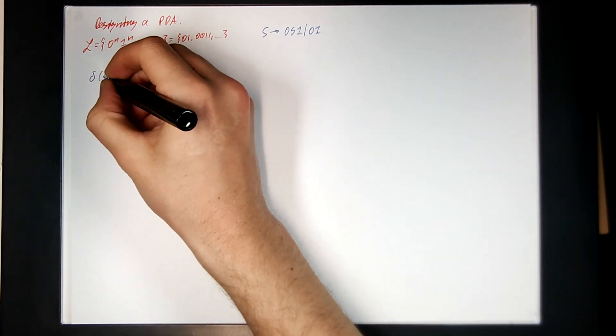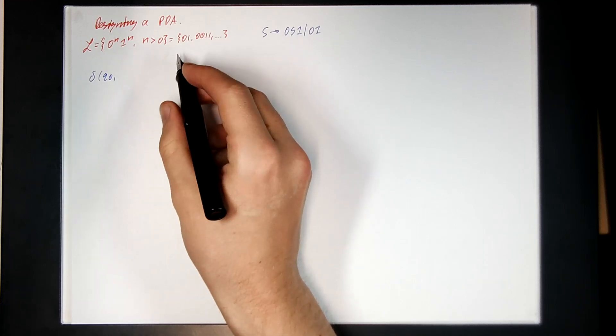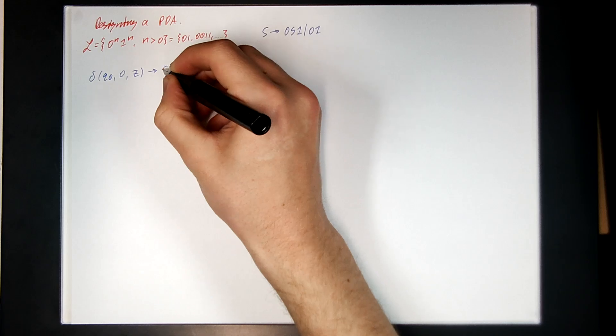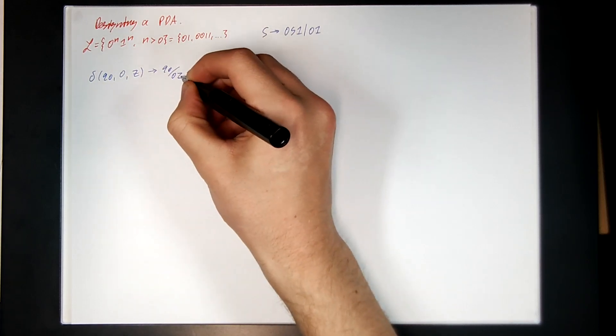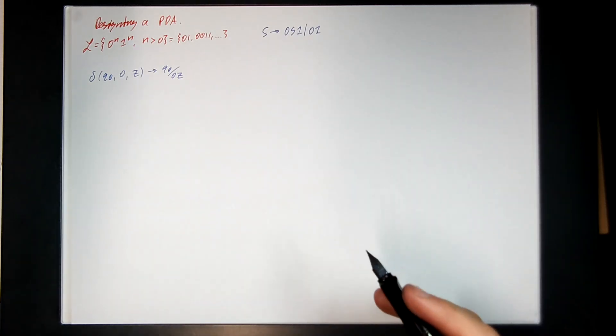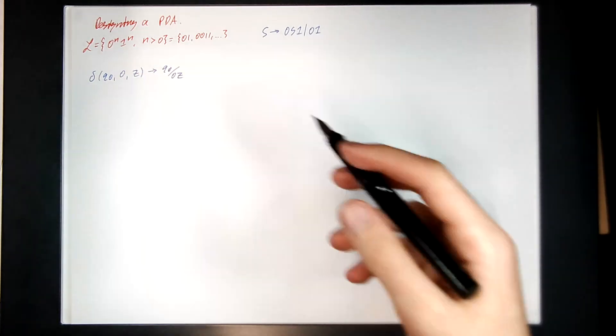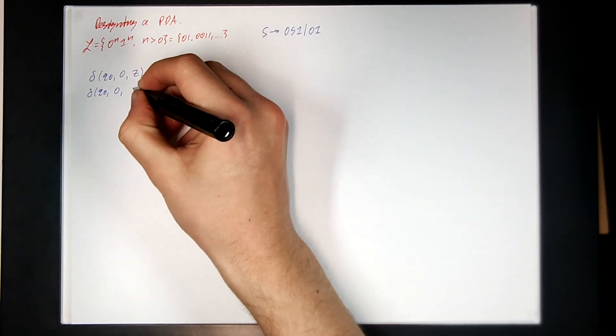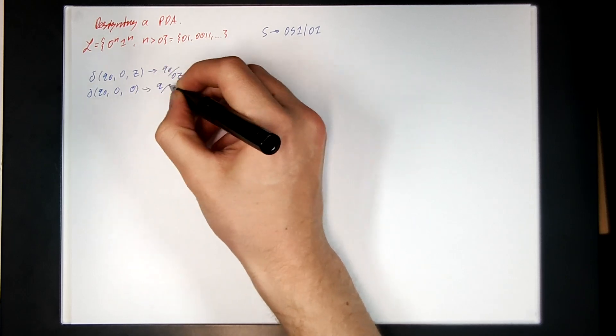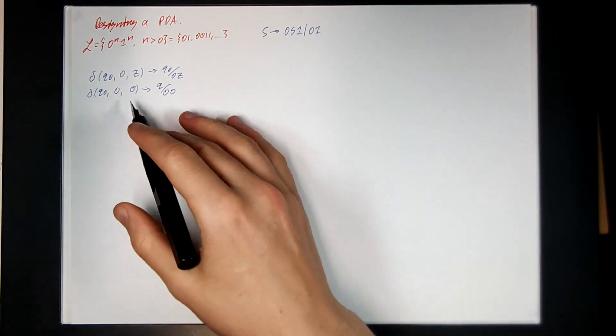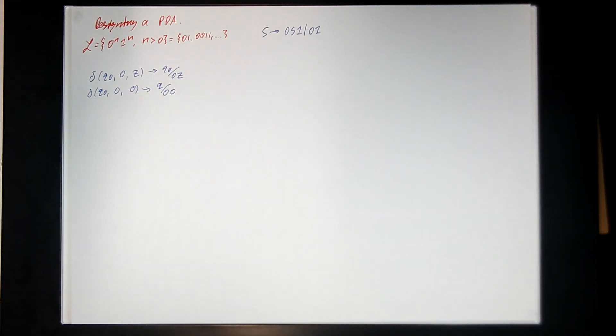So from the initial state Q0, if I see a 0 on the stack and an empty stack, I'm going to go back to Q0 and then push the 0 onto the stack. And if there's any other input, I'm just going to get stuck and reject, because this string has to start with a 0. Similarly, the 0 on the input and a 0 on the stack, I'm going to pop the 0 and then put that 0 back and put this new 0 on top as well. Because when you read a symbol off the stack, it's always consumed, which means you've got to push it back on again.